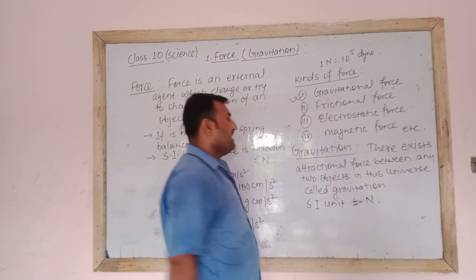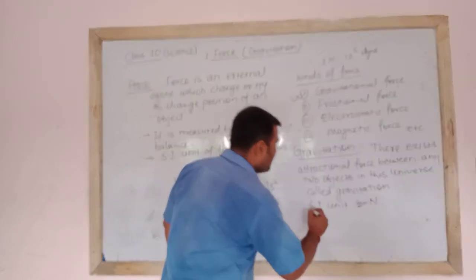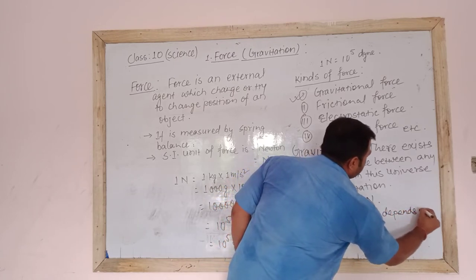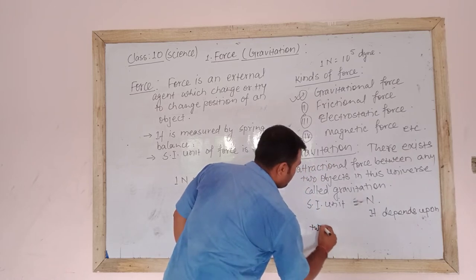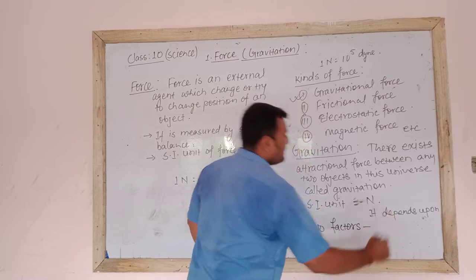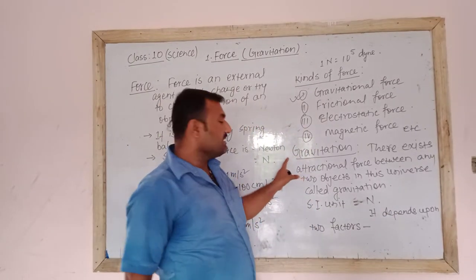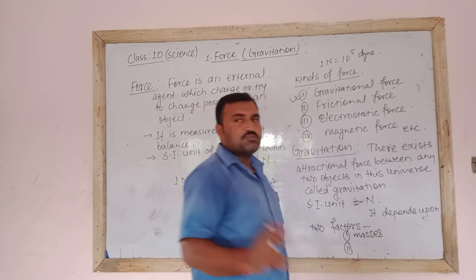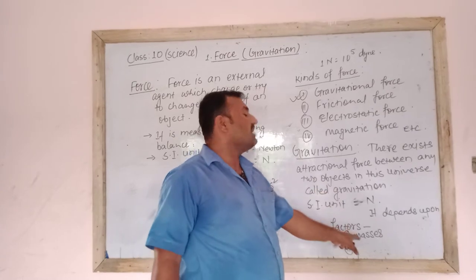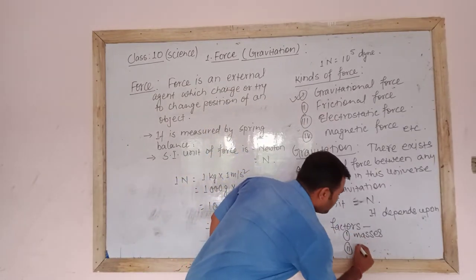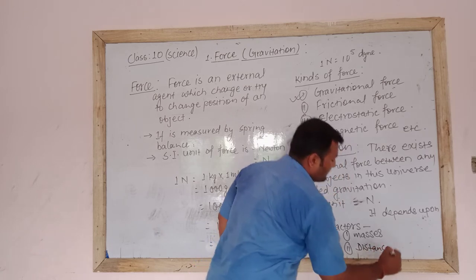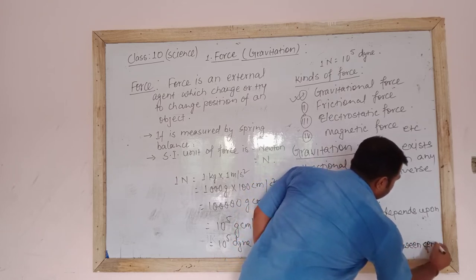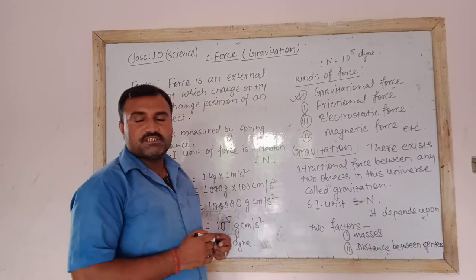Gravitation is a type of force, therefore the SI unit of gravitation is Newton. Gravitation depends upon mainly two factors: first, the masses of the bodies — it exists between two bodies with their real masses — and second, the distance between their centers.